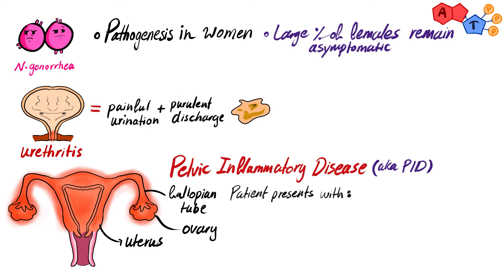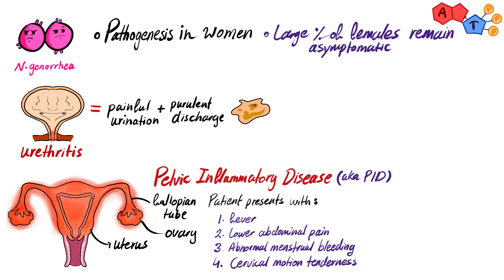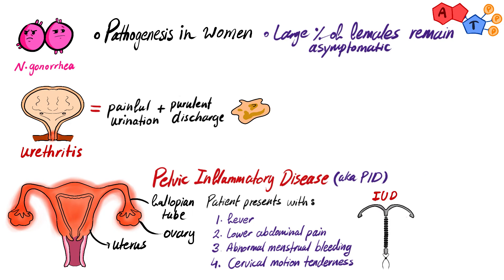PID patients usually present with fever, lower abdominal pain, abnormal menstrual bleeding, and cervical motion tenderness. Cervical motion tenderness is the pain elicited when the cervix is moved by the doctor's examining finger, and it is a very important clinical sign for PID. It's also worth noting that the presence of an intrauterine device, used as contraception, increases the risk of progression to PID.